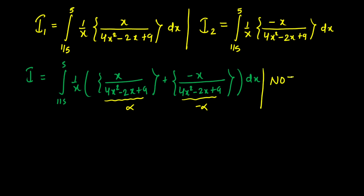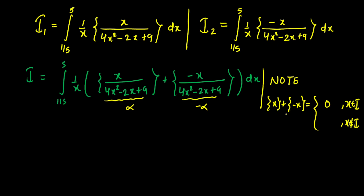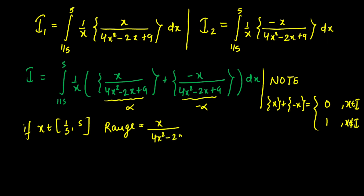This is an important identity used in many JEE problems. For {x} + {-x}: if x is an integer, the sum equals 0; if x is not an integer, the sum always equals 1. We can verify with any non-integer like 0.5 or 0.7. So we need to determine whether α = x/(4x²-2x+9) is an integer or a fraction when x ∈ [1/5, 5].